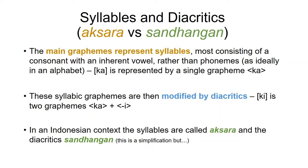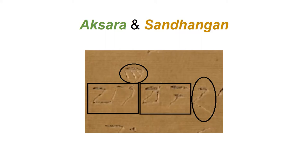Here's a Sundanese manuscript where in real life the letters are about three millimeters high. In the rectangles we've got the aksara — the syllables — and in the circles we've got the sandangan that modify them. The first is the aksara ha, the second is aksara ta, but with a vowel U diacritic. There's also a sign called the virama, or paten in Javanese, which cancels the inherent vowel of the aksara.